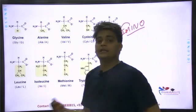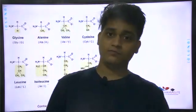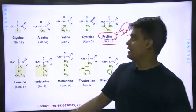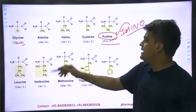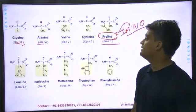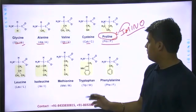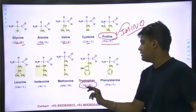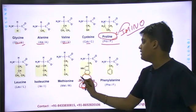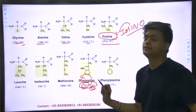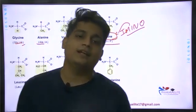Many times the question doesn't come directly — they won't say 'glycine' or 'isoleucine' by name. The question will be altered: for glycine they will write 'Gly,' for alanine 'Ala,' for valine 'Val' — those are easy. The problem starts somewhere with tryptophan: Trp is fine, but W for tryptophan is not immediately obvious to everyone.